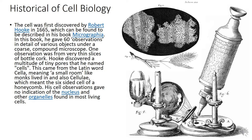The history of cell biology: the cell was first discovered by Robert Hooke in 1665. Scientists studying cell biology discovered cells using a simple compound microscope, as described in Hooke's book Micrographia.